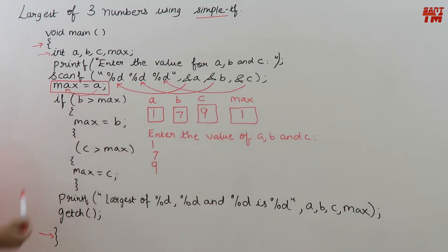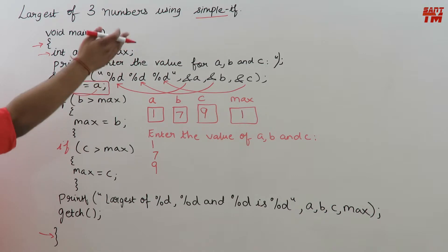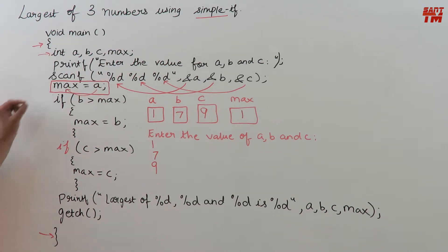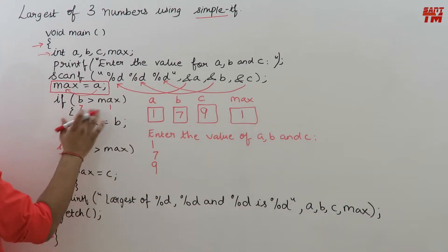If b is greater than max. So this is a simple if because for this there is no else part. And similarly there is one more if. After this if gets over. For this if also there is no else part. So it is a simple if construct. Now if b is greater than max. What is b? b is 7 and max is 1. b is 7, max is 1. 7 is greater than 1.